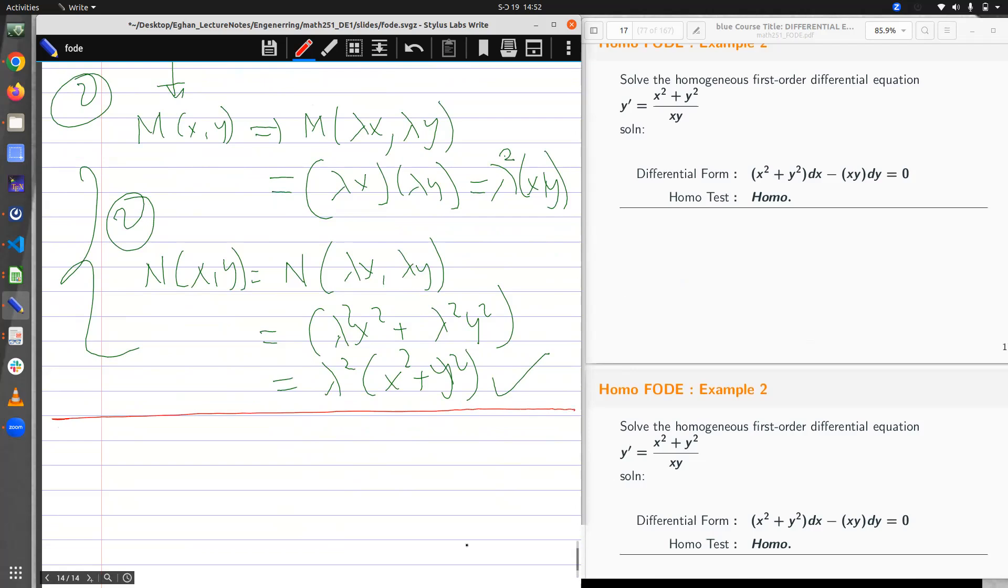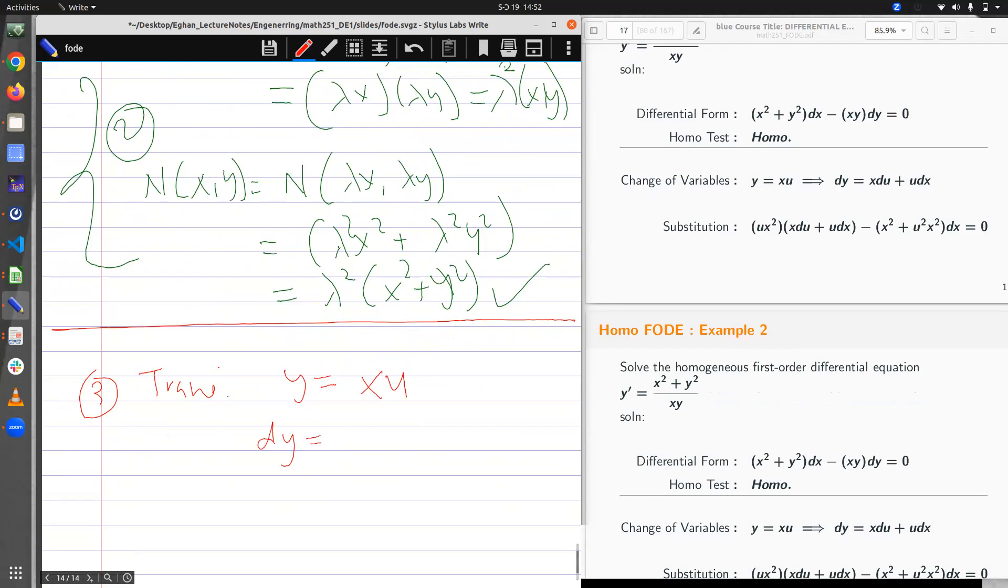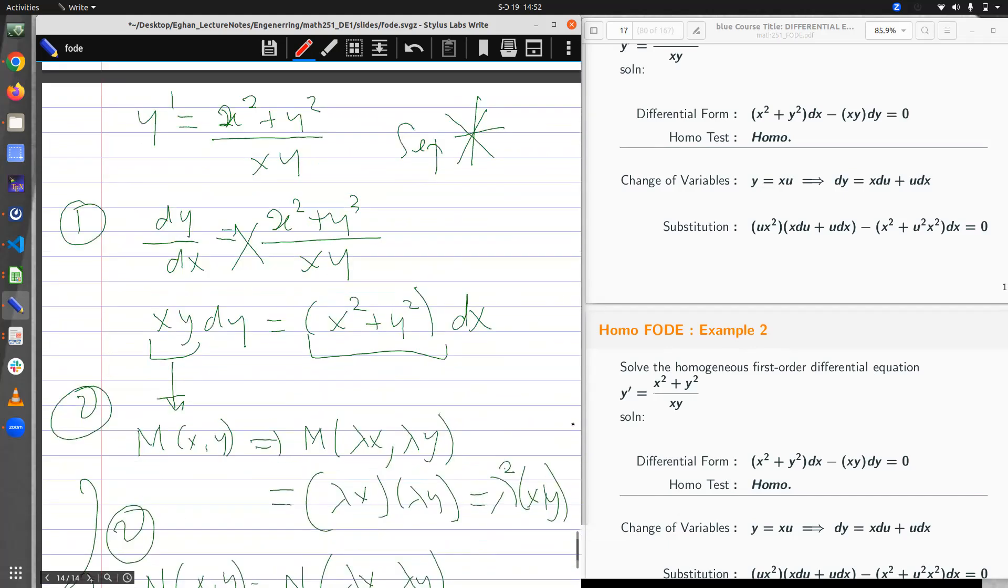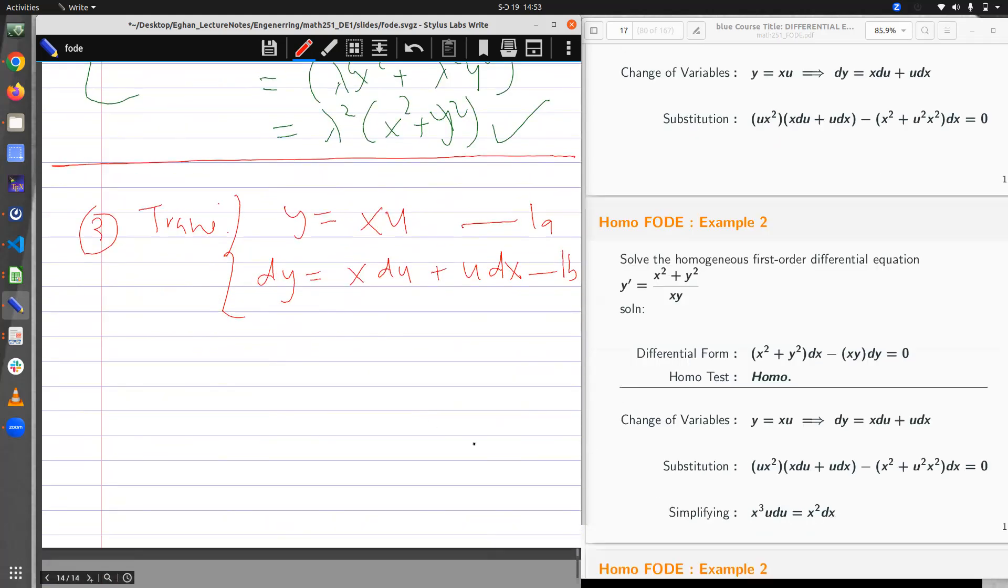Let's see what we can do. How do we make it separable now? I use the transformation. The transformation is such that y is equal to x u. And then dy will be equal to x du plus u dx. And so I substitute 1a, 1b into this differential form here. So let me rewrite the differential form below for us all to see. So the differential form is x squared plus y squared times dx is equal to x y dy.